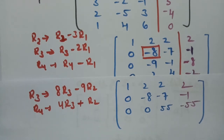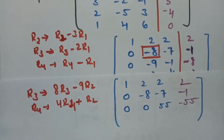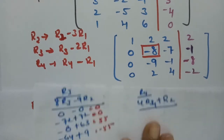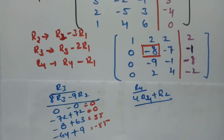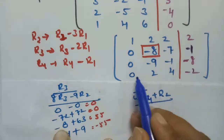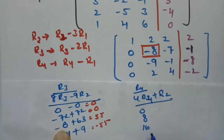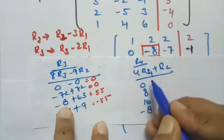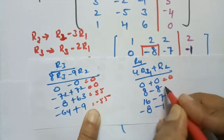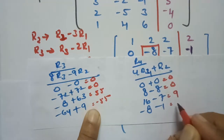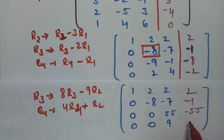For R4, the operation is 4R4 plus R2. R4 is 0, 2, 4, minus 2, multiplied by 4 gives 0, 8, 16, minus 8. Adding R2 which is 0, minus 8, minus 7, minus 1, the resulting values are 0, 0, 9 | minus 9. There is a partition separating A and B.